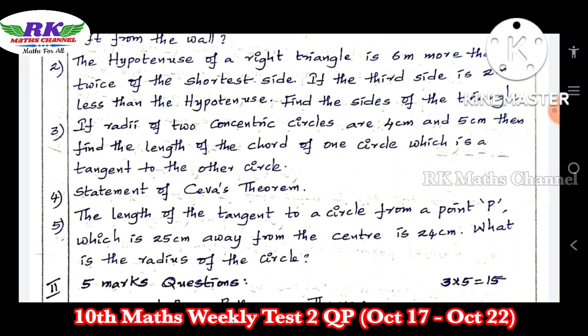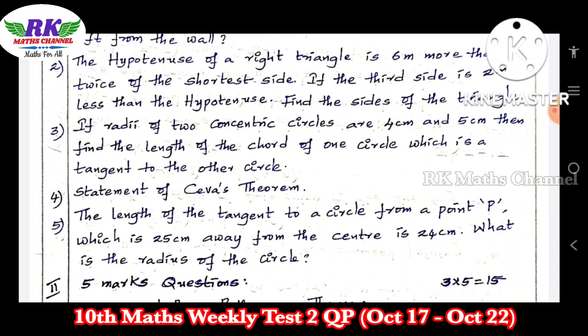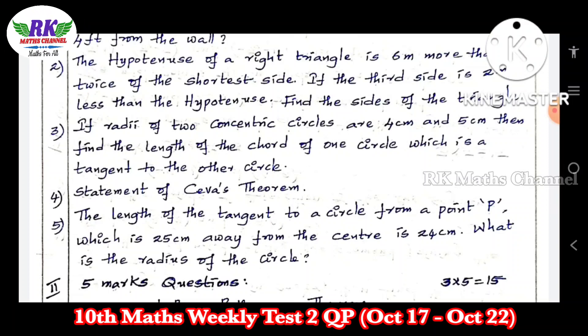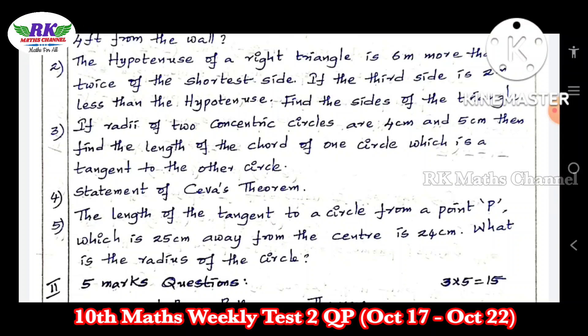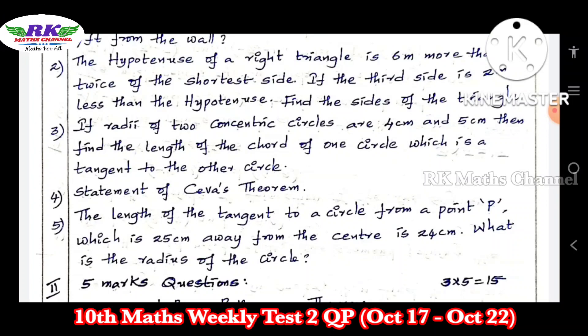If the radii of two concentric circles are 4cm and 5cm, then find the length of the chord of one circle which is a tangent to the other circle.